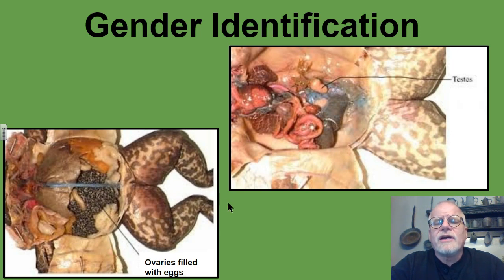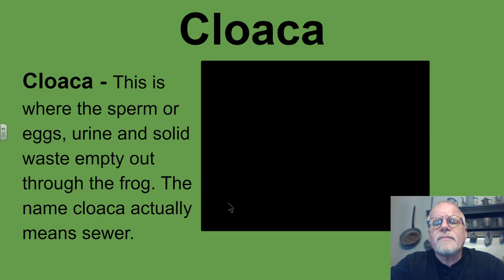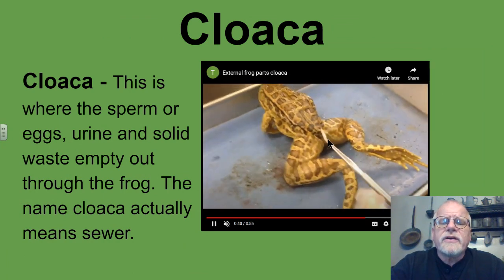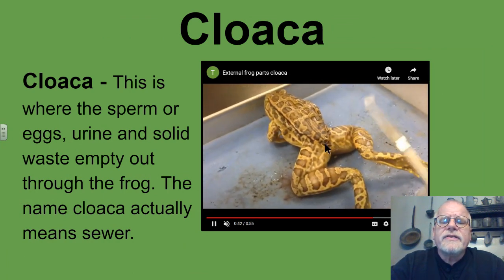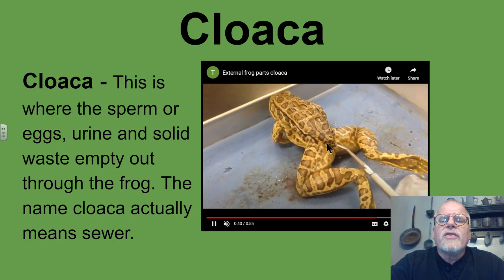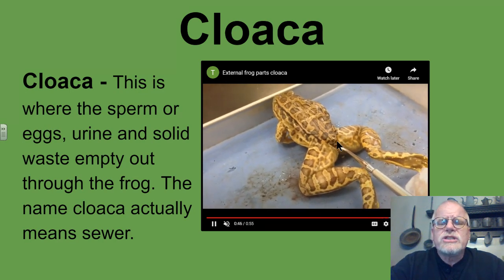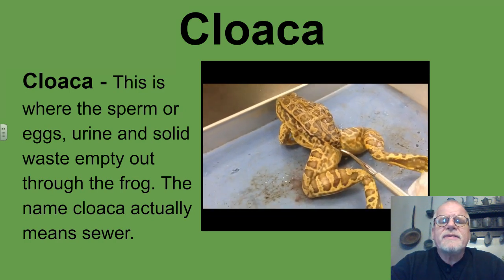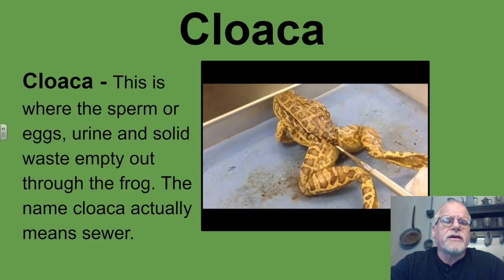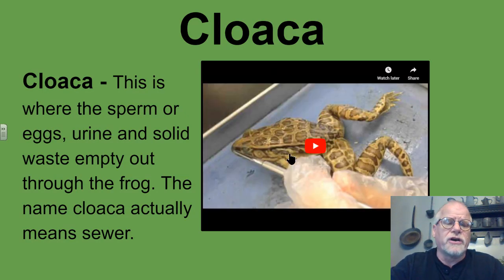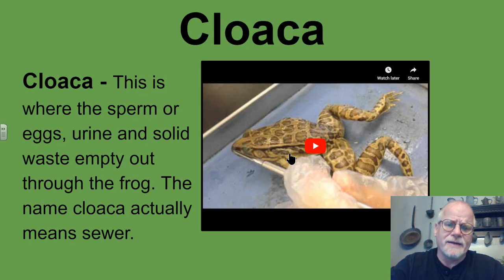Let's take a look at the cloaca. Right down in here in the frog you're going to see this area — this is the cloaca, and the word cloaca actually means sewer, because everything is pushed out through here: the sperm for the males, the eggs for the females, the urine, and the solid waste — all emptied out through that cloaca.